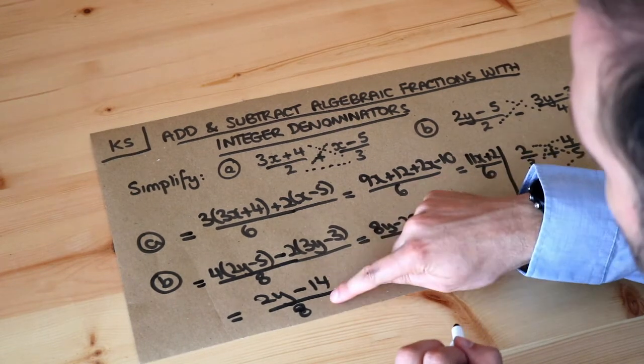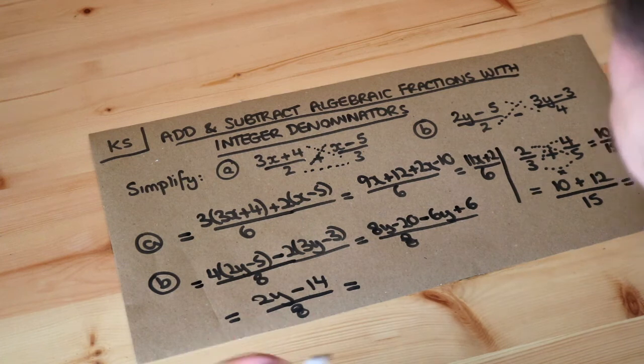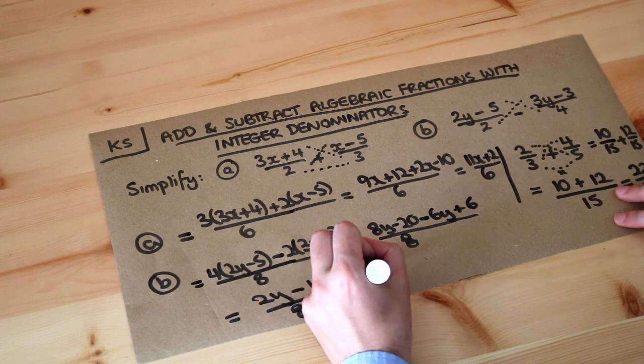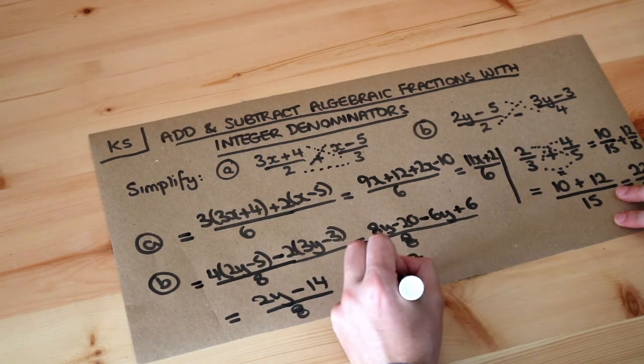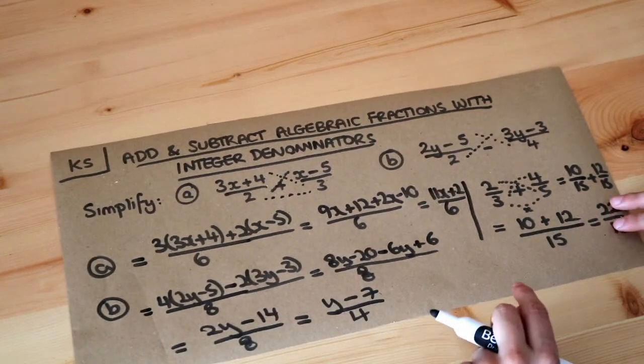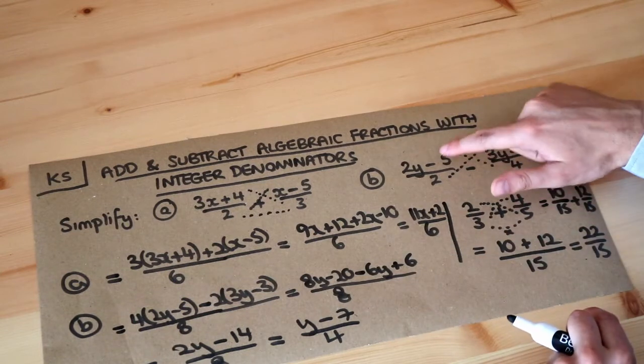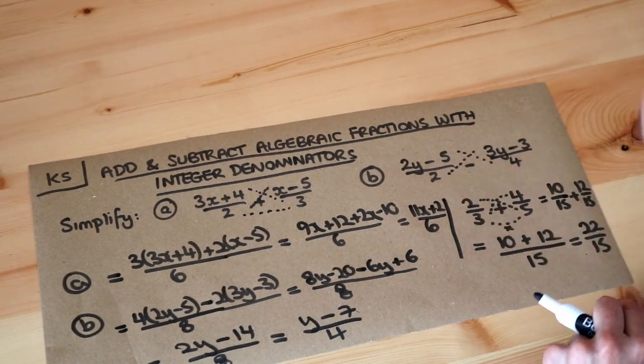Now notice we could divide top and bottom of this fraction by two to simplify because we can simplify fractions by dividing top and bottom by the same number. So if we divide this by two, we just get y minus seven. Divide the bottom by two, we get four. And you would have avoided having to divide by two if you'd avoided this cross multiplication method and you'd just multiply top and bottom of this fraction by two first to make sure these are both over four.